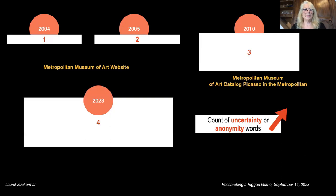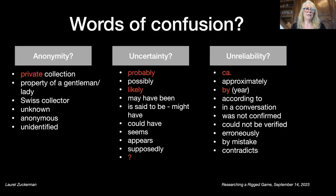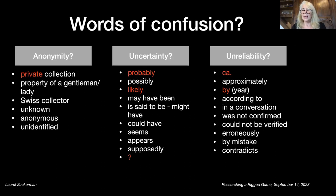You can count them and see the trends in their frequency. I wondered whether this is the only artwork that has this kind of evolution in these kinds of words. I think of them as words of confusion or words of deception — classifiable into three big groups. Words of anonymity: it looks like it's saying something, but actually confers no information about who owned the painting. Words of uncertainty: often a cover for speculation not justified by archival documents. And words of unreliability: approximations indicating that one does not have a sales document with a precise date documenting a transaction.